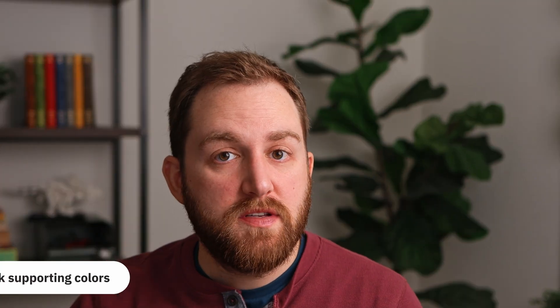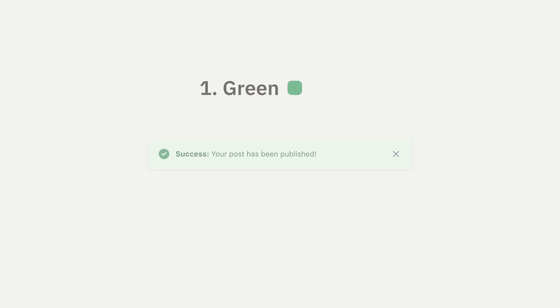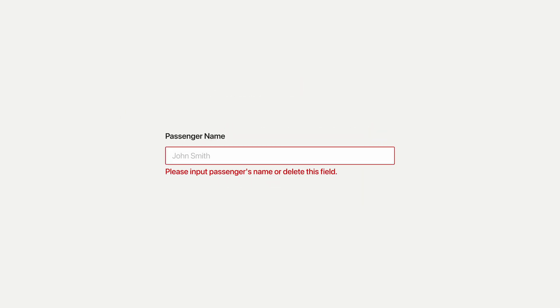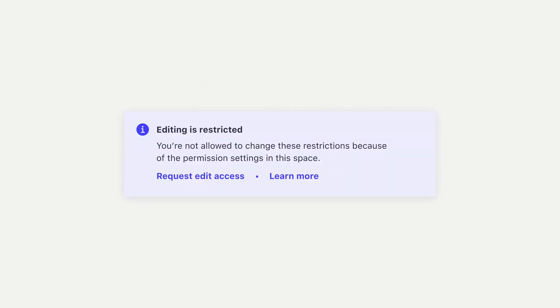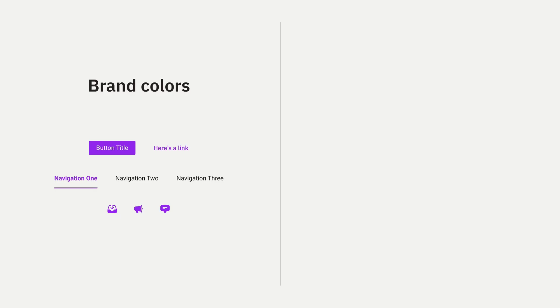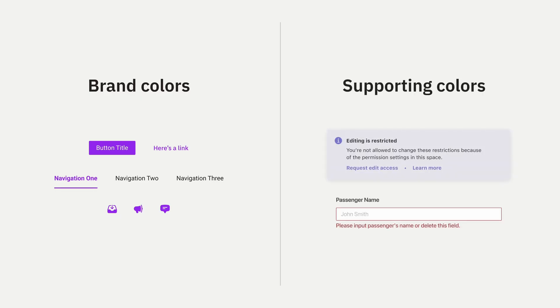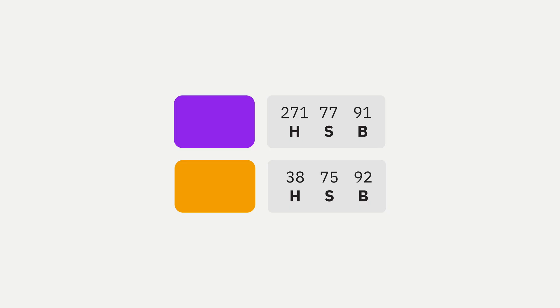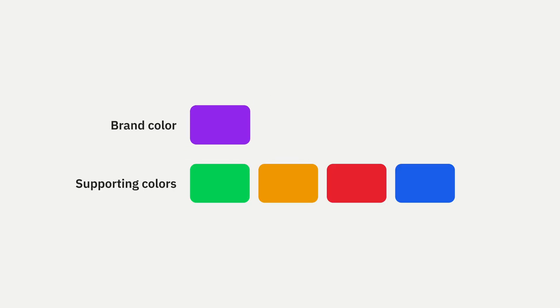Next, we're going to pick our supporting colors. These are the colors we'll use in specific places in the interface where we need to draw attention or communicate something to the user. I like to have at least four: green for success messages or positive confirmations, orange or yellow for warnings, red for dangerous situations like a form error, and blue for neutral informational messages. Supporting colors need to feel like they go along with your brand color. If your brand color is really saturated and your supporting colors are really desaturated, the UI might feel disconnected. To avoid this, pay attention to your HSB numbers — keep saturation and brightness within five or ten of your base color, then adjust the hue however you want. Let's go with these four supporting colors for our palette.